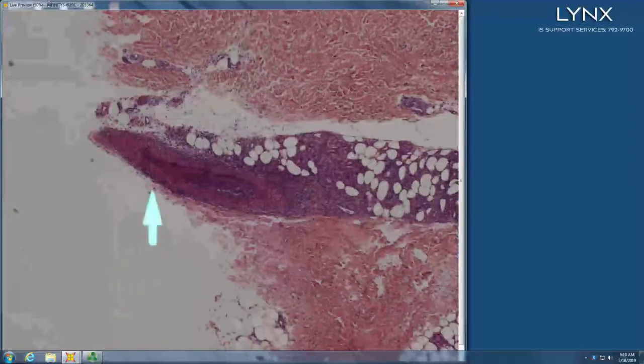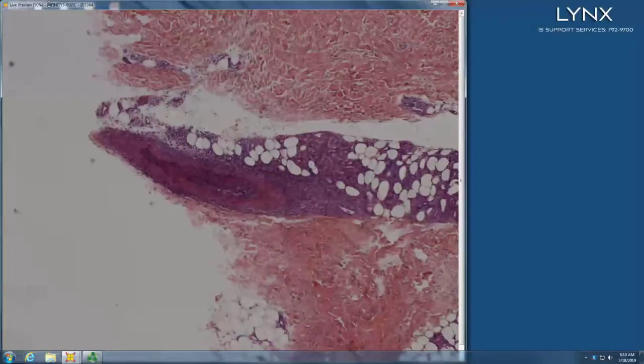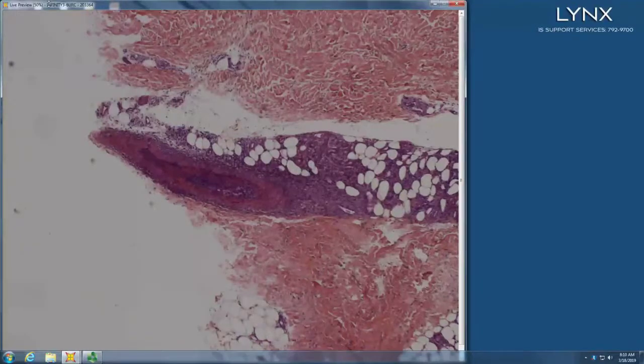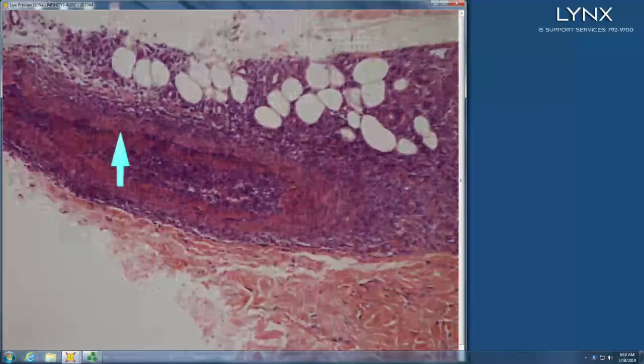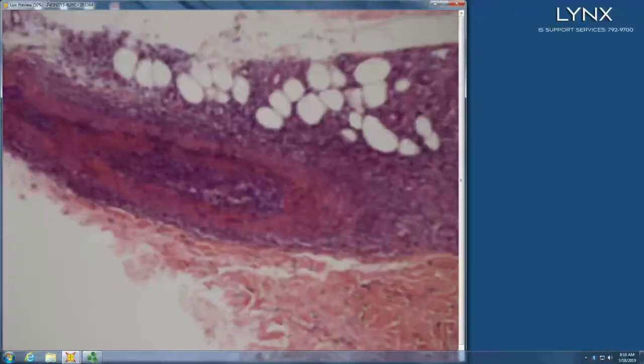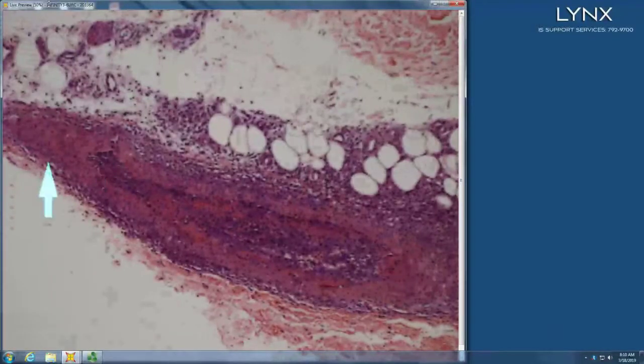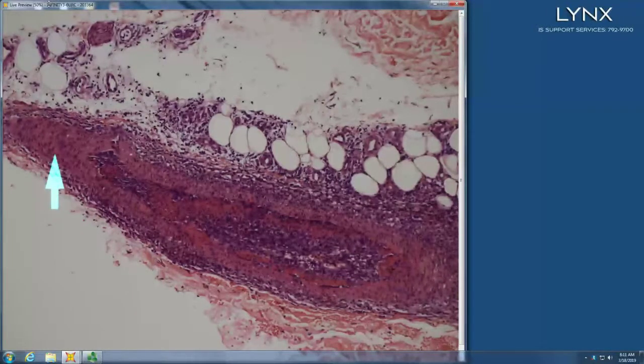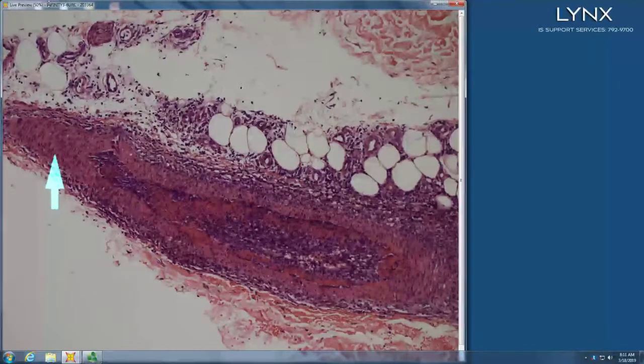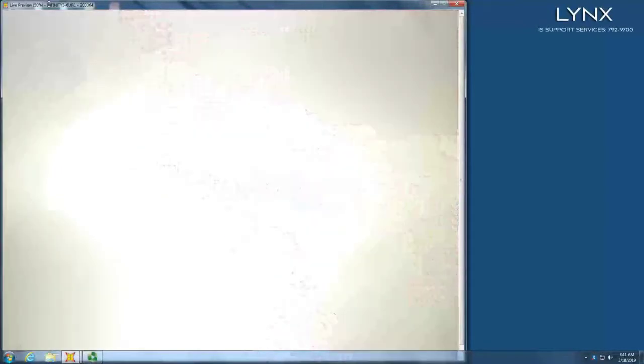Everything's fine and dandy until you come to that. What kind of vessel is that? Larger vessel. With that concentric, continuous wreath of muscle. PAN. Polyarteritis nodosa. That's an artery and that's PAN. Very good.